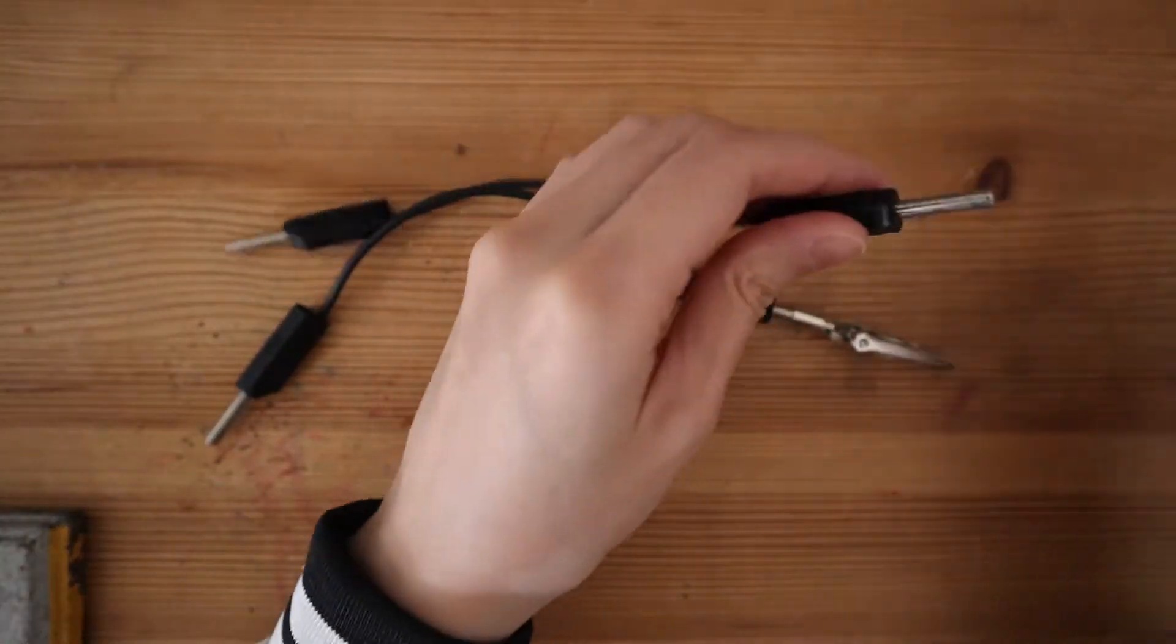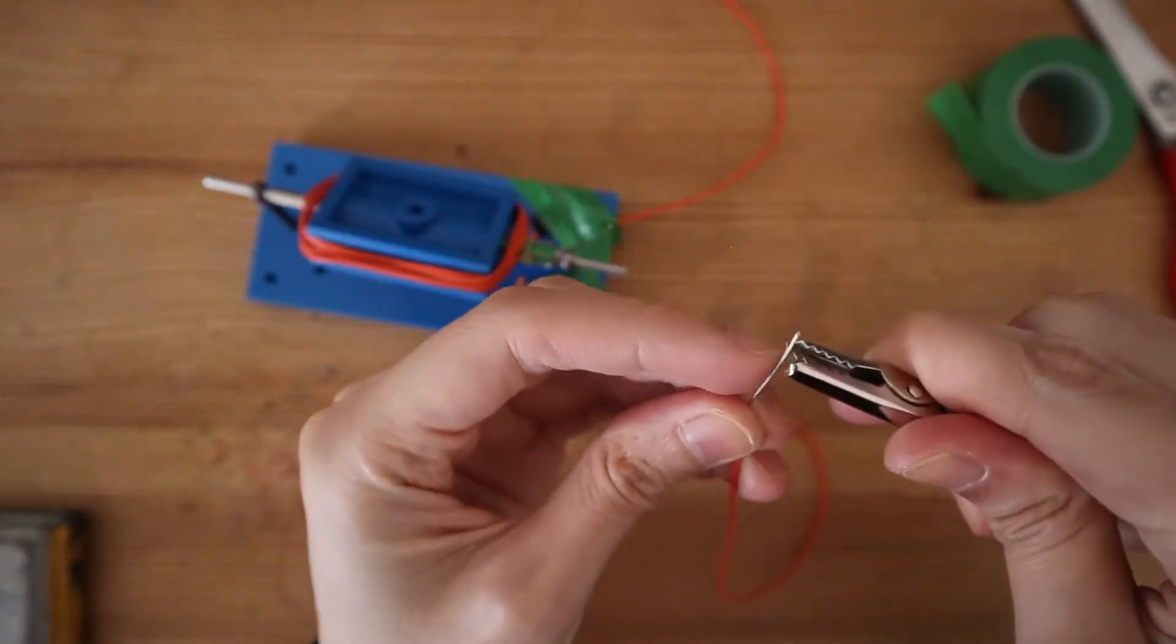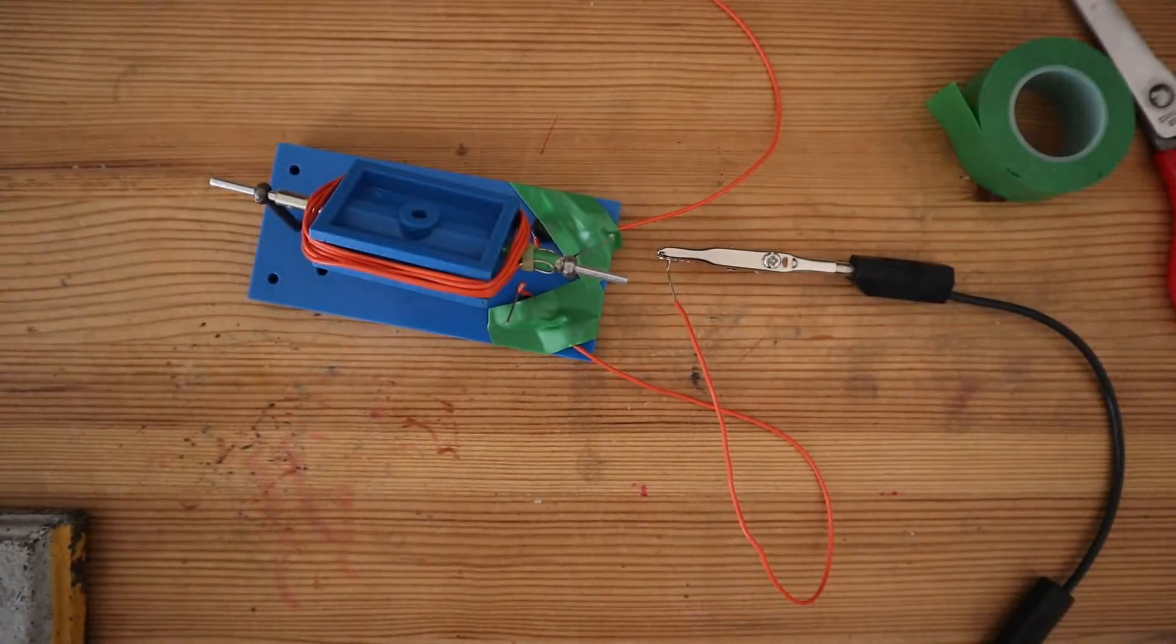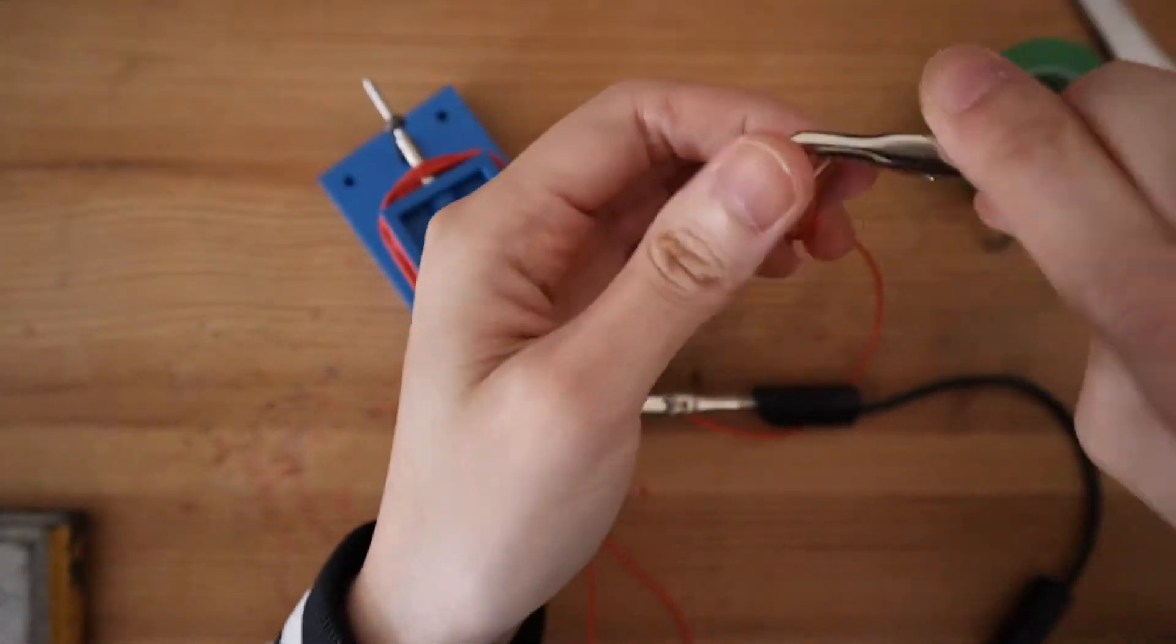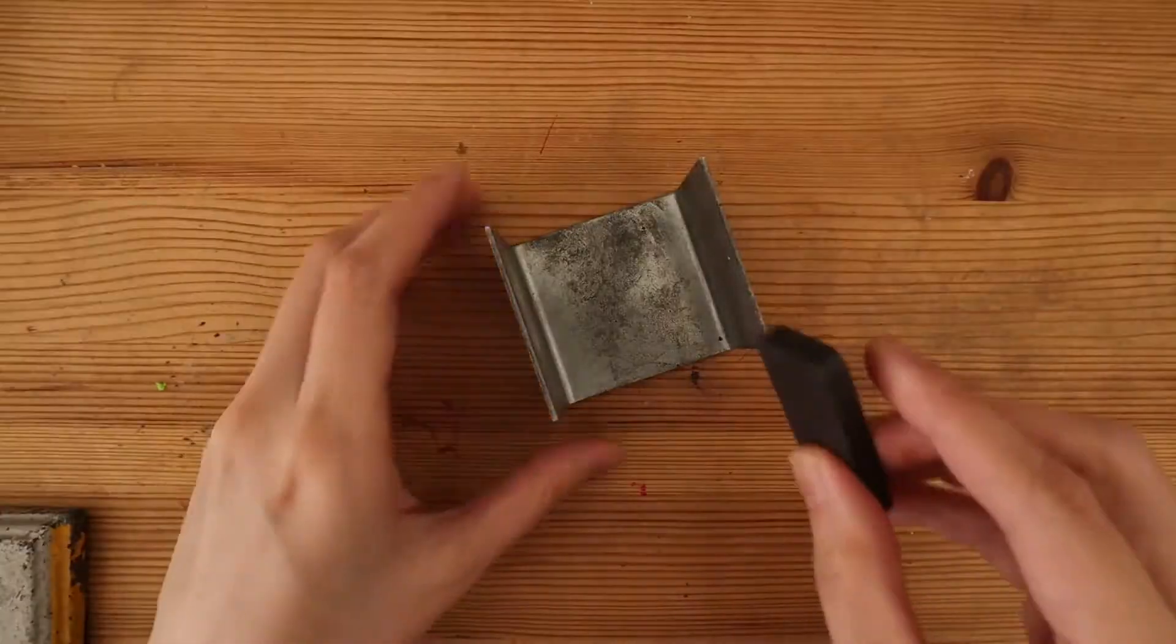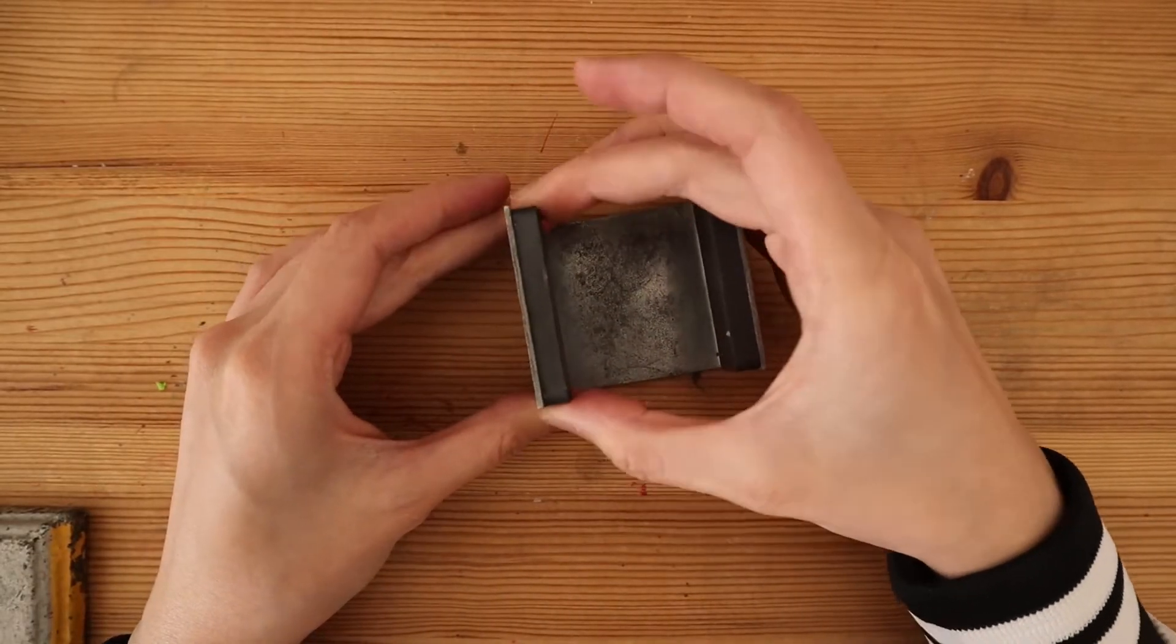Each lead needs an alligator clip. Put the magnets on the steel yoke, making sure opposite poles are facing inward.